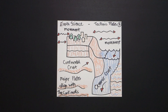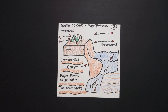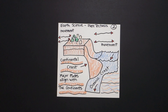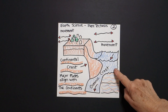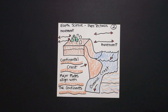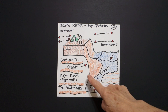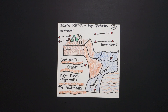So let's see what this looks like all colored in. On this part two of plate tectonics, again the emphasis is on movement — the continental crust and the oceanic crust coming and blending together, and that the major plates align with the continents. It took millions of years, but that's how it happened. Bye-bye.